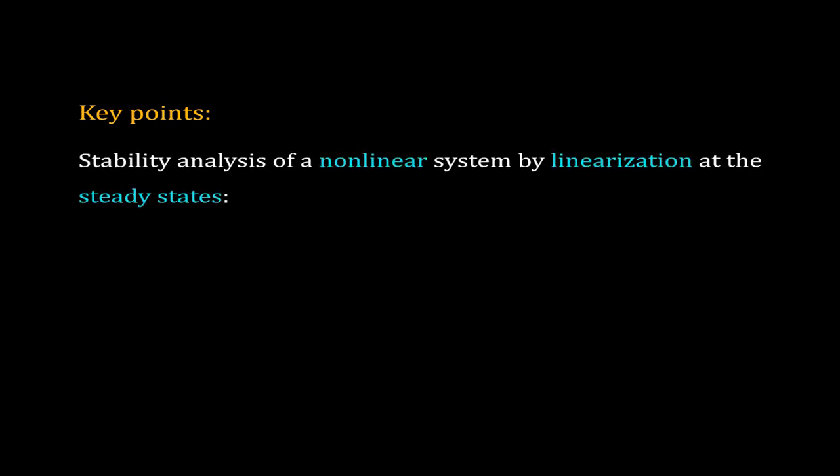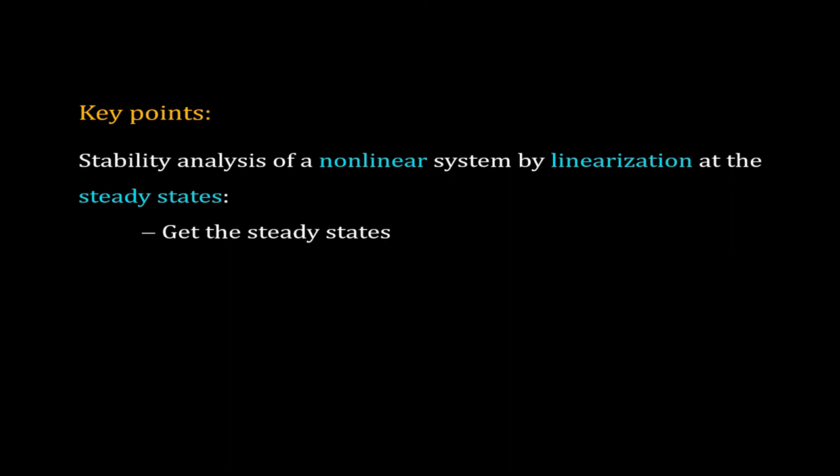So let me jot down the key points of this video. In this video, we learned to analyze a nonlinear system by linearizing it around its steady state. A nonlinear system can have multiple steady states. We determine the stability of each of these steady states separately. In doing so, we get the phase portrait around each of these steady states. First, identify the steady states. In many cases, you can find the steady state very easily by using nullclines. Take one of those steady states and calculate the Jacobian matrix for that particular steady state.